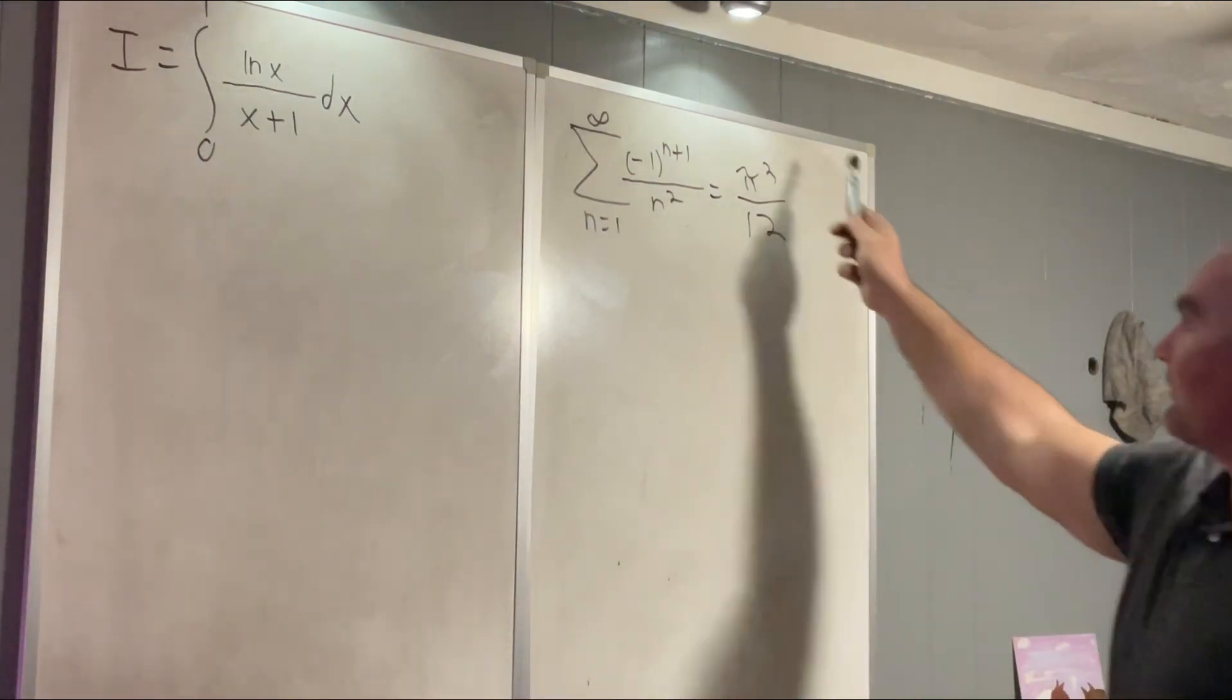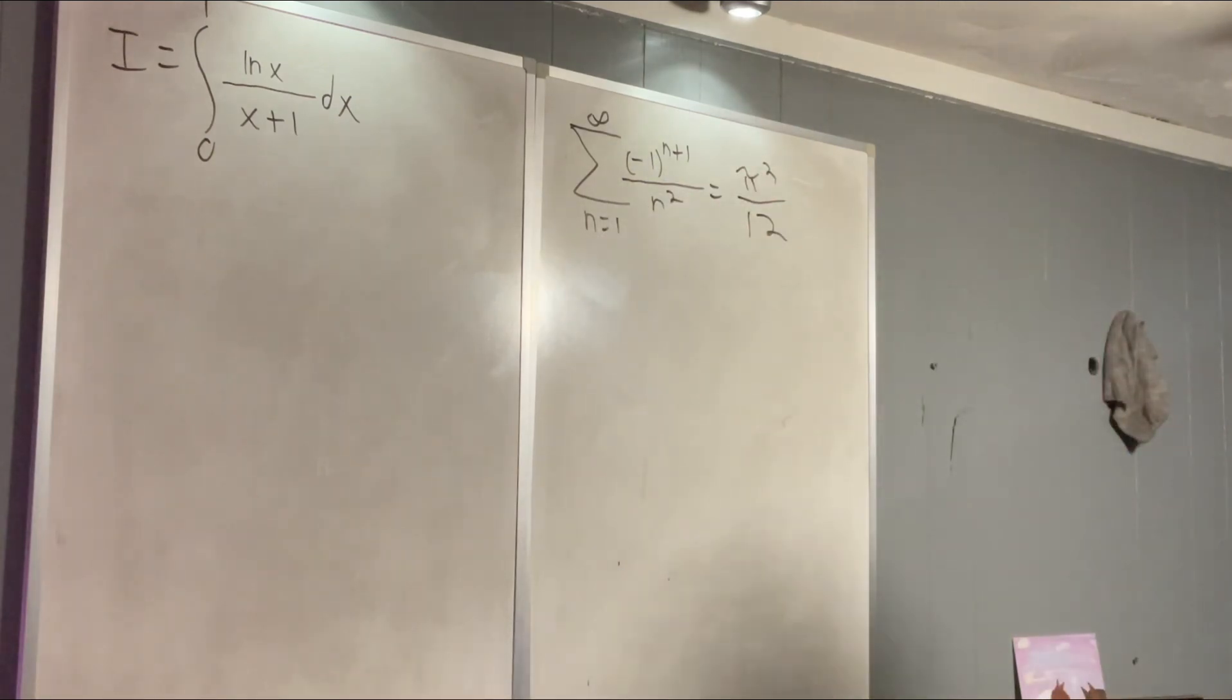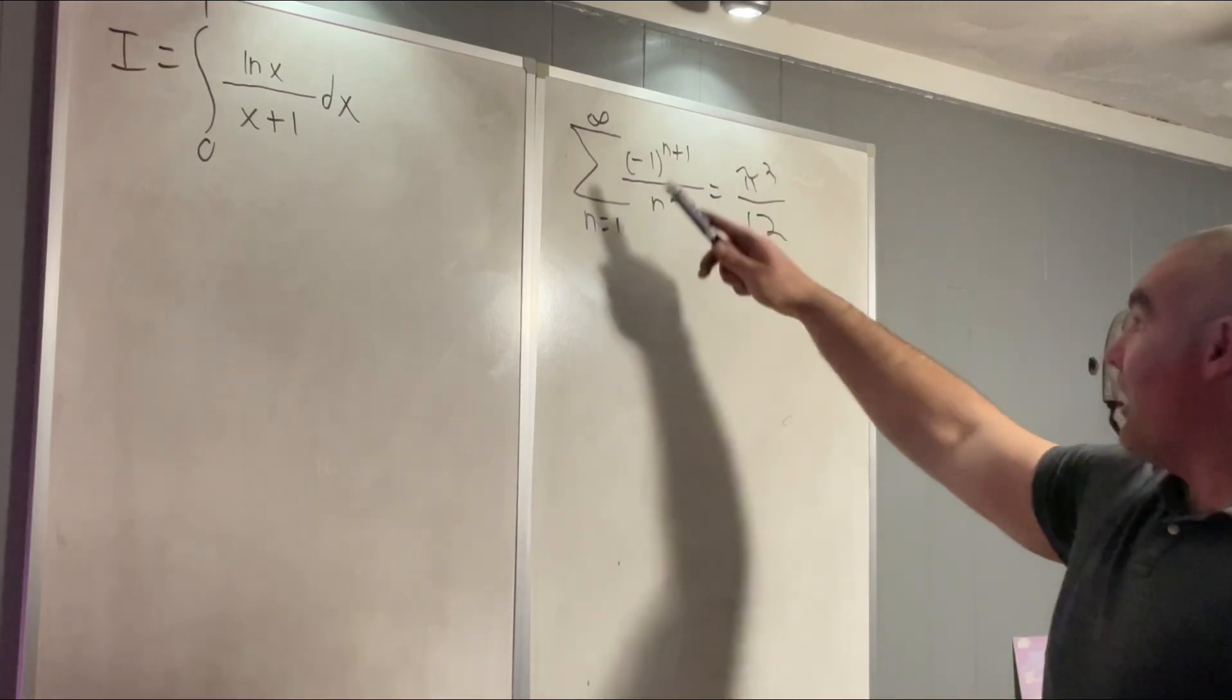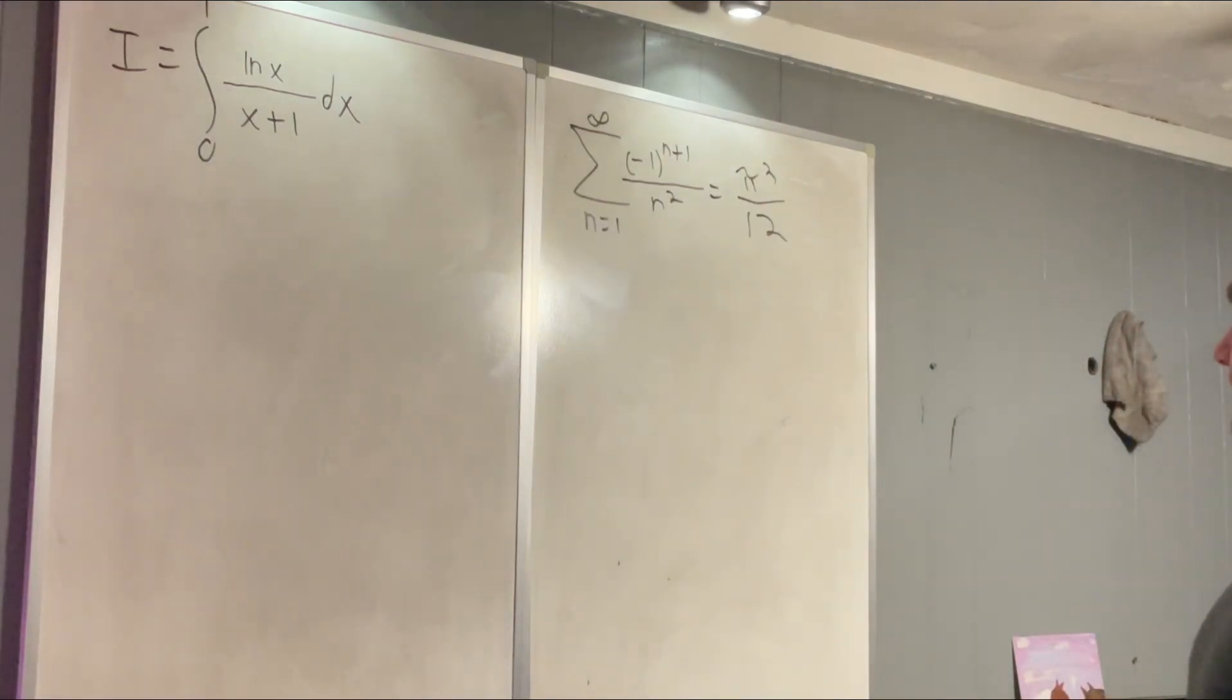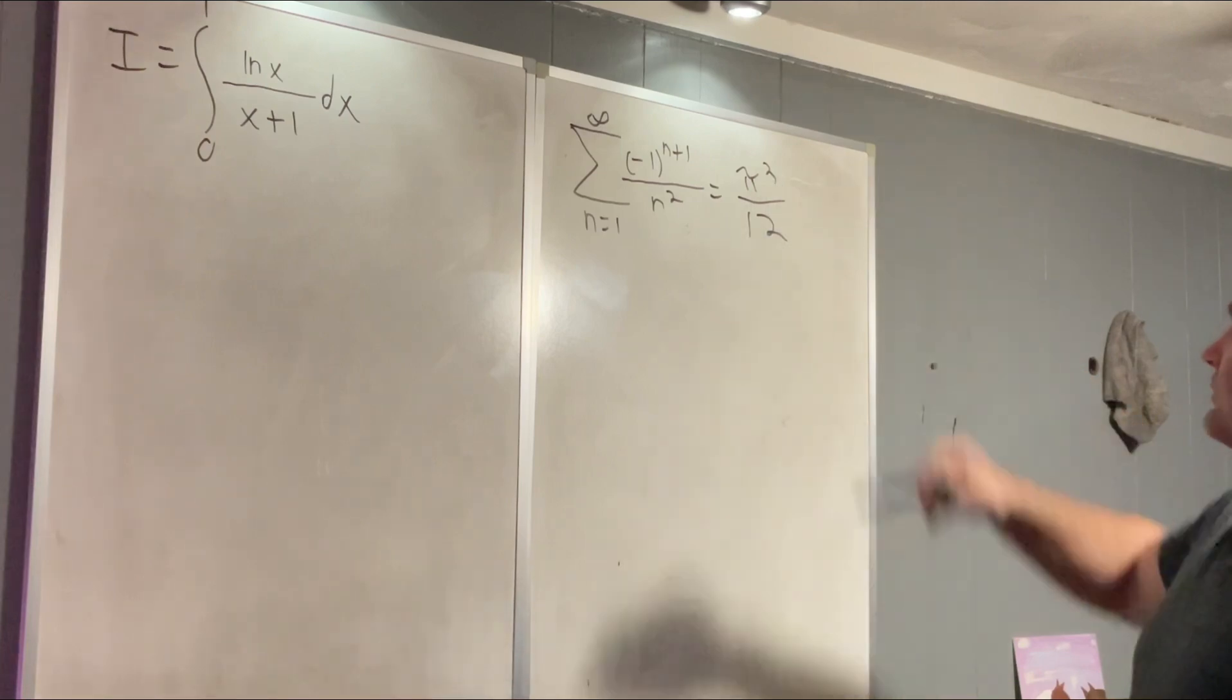That comes from a manipulation of the Basel problem which says that the sum of the reciprocals of the squares, non-alternating, is equal to pi squared over 6.